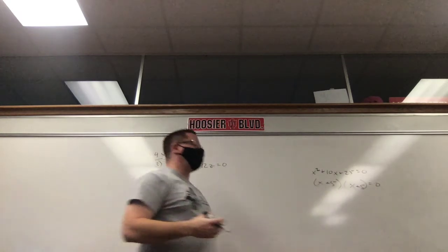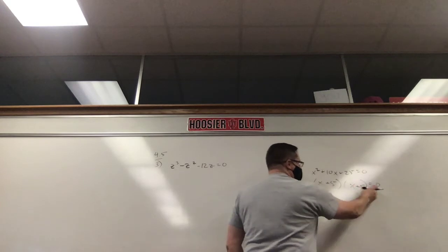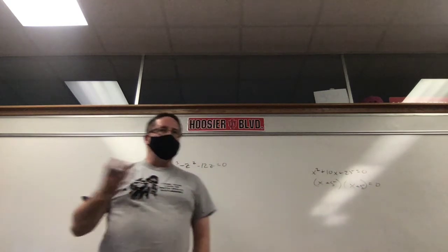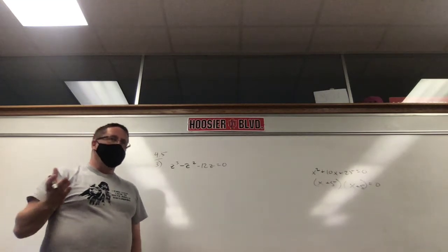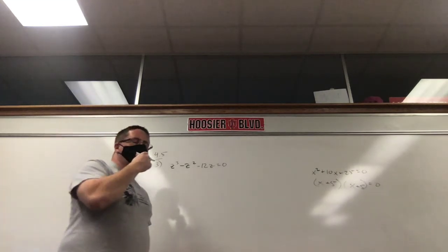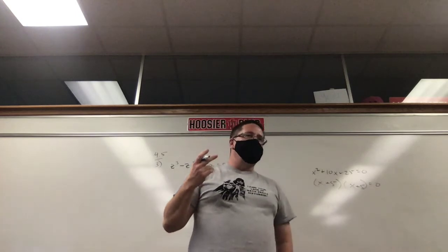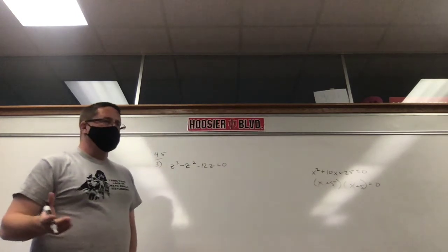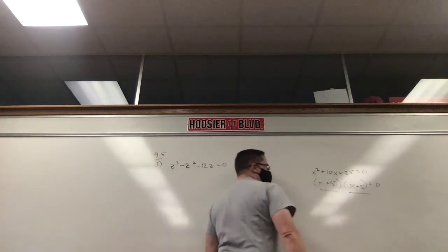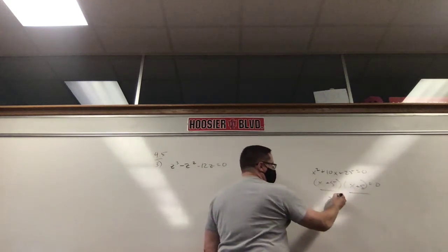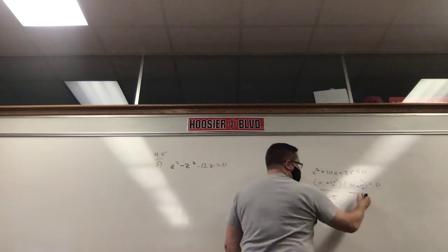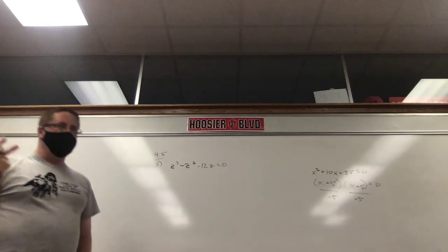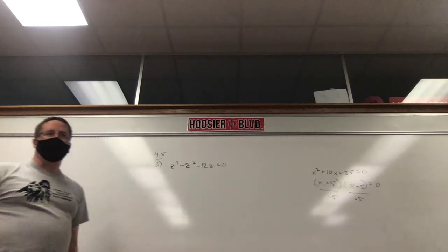How do you times to 25 but add to 10? Five and five. Then we ask ourselves what makes zero. When you multiply and get zero for an answer, something has to be zero. What makes (x+5) zero? Negative five. What makes (x+5) zero? Negative five. So this is what I meant by 'kind of two answers' — we have two answers, but it's the same answer. It's a double answer.